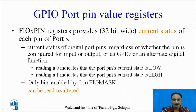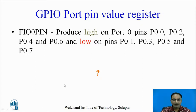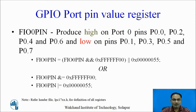Let us learn this with an example. We want to produce logic high on port 0 pins P0.0, P0.2, P0.4, and P0.6, and logic low on pins P0.1, P0.3, P0.5, and P0.7. To produce logic high, write 1 on the corresponding bits of the pin value register; to force logic low, write 0 on the corresponding bits.